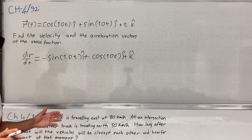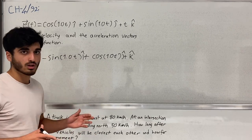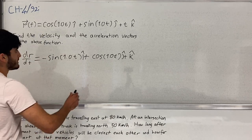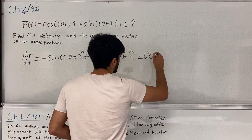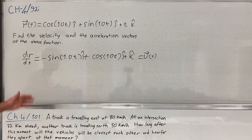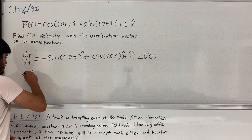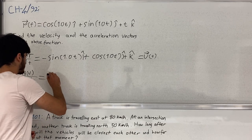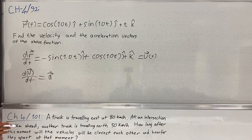In vectors generally, when you take the derivative you must keep the vector notation throughout. So this gives us the velocity vector function for this particle. Now let's take another derivative — dv over dt — which gives us the acceleration vector. I should also keep the vector notation on the derivative symbol.